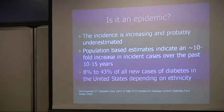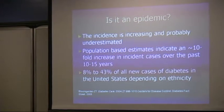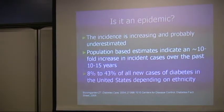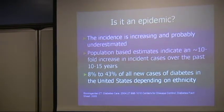Is this an epidemic? We are seeing features of an epidemic because of the increasing incidence of the disease. Population-based estimates indicate approximately a 10-fold increase in incidence cases over the past 10 to 15 years. Between 8 and 43 percent of all diabetes cases diagnosed in the United States are type 2, with higher percentages seen in Hispanic Americans and Native Americans.